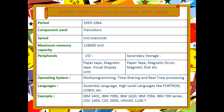Here are the useful summary points for second generation computers. They existed from 1955 to 1964. The main component was transistors. The working speed was in microseconds. The input/output devices used were paper tape, magnetic tape, and visual display units. Secondary storage included paper tape, magnetic drum, and magnetic disc. The language used was assembly language and some high-level languages like FORTRAN and COBOL. Examples include IBM 1401, IBM 7090, IBM 1620, IBM 7094, IBM 700 series, CDC 1604, CDC 3600, and UNIVAC 1108.